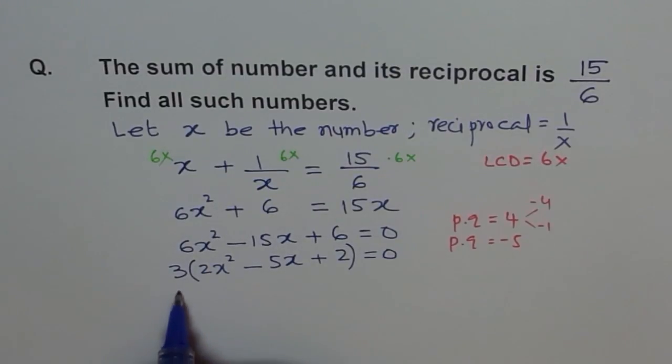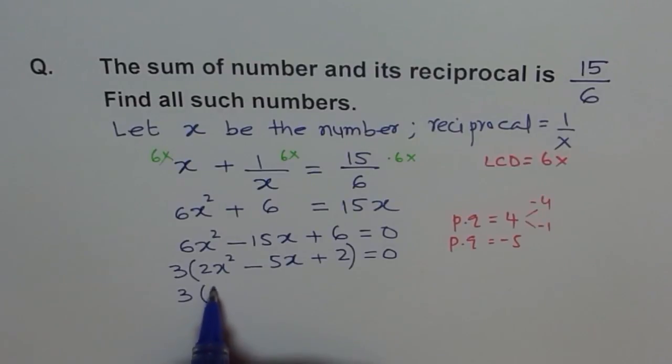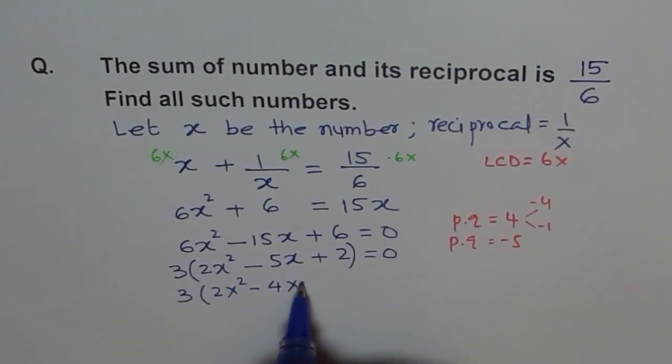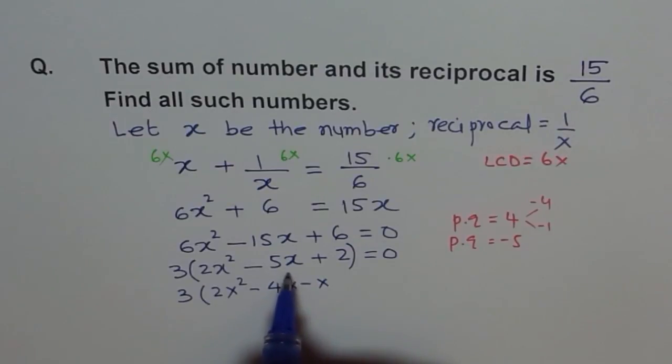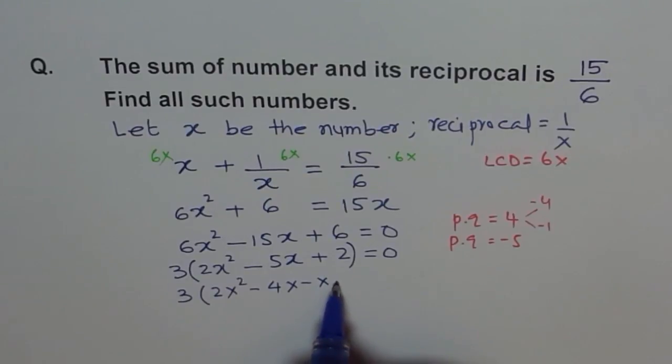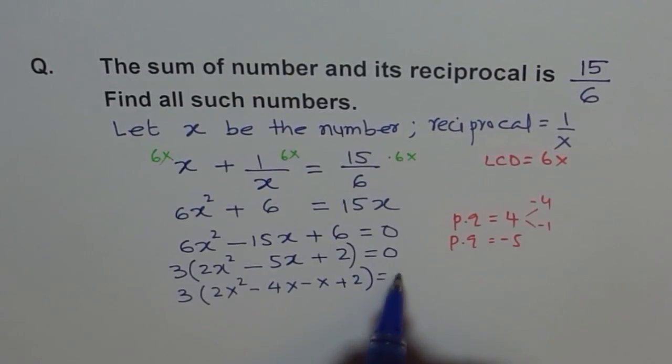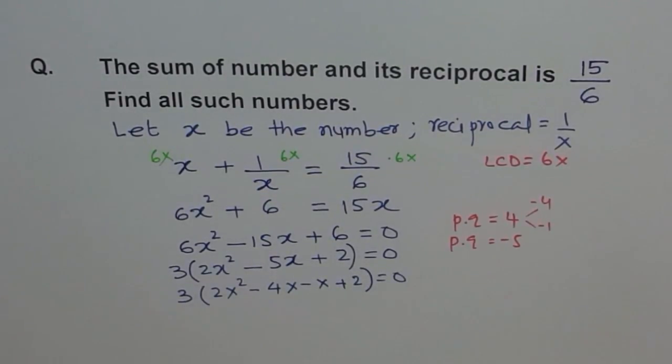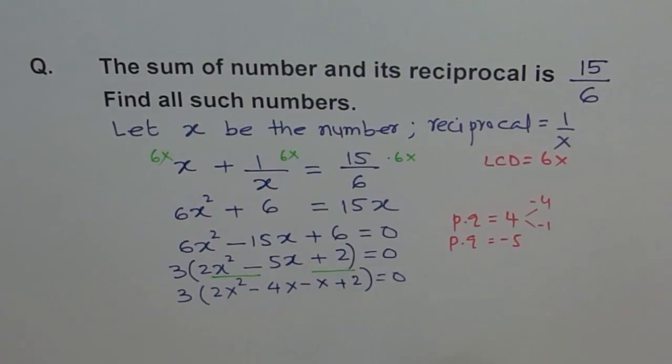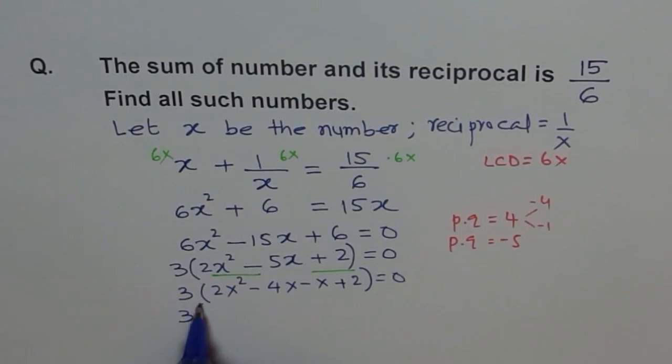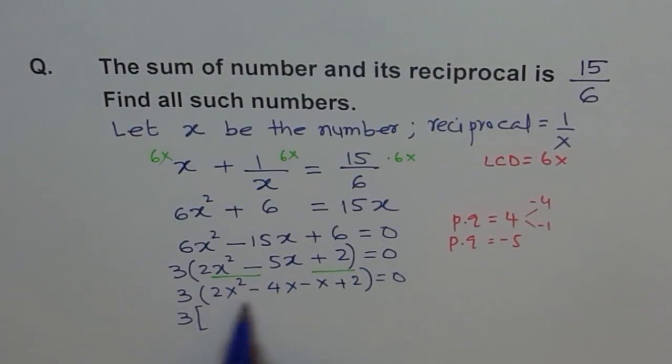So we will split this and try to factor it. So we have 2x² minus 4x minus x. So we split 5x, decompose it into its components of minus 4x and minus x plus 2 equals 0. Now we can combine the two terms and complete our factoring.